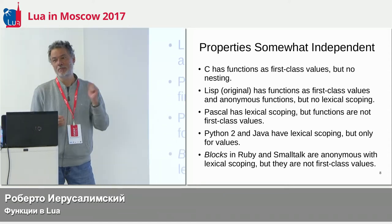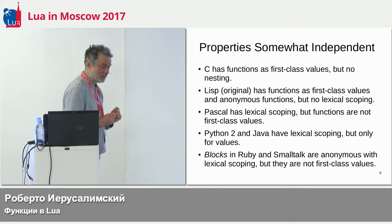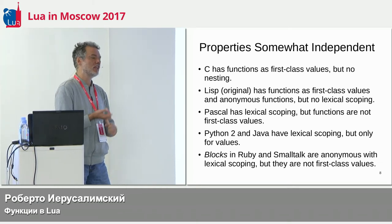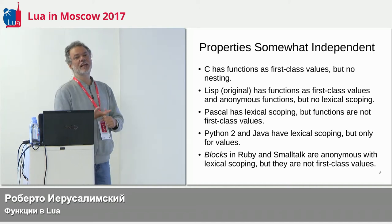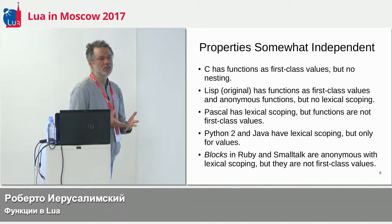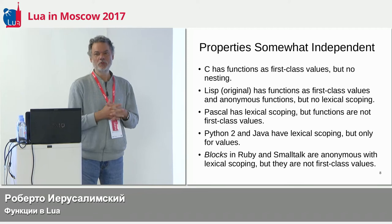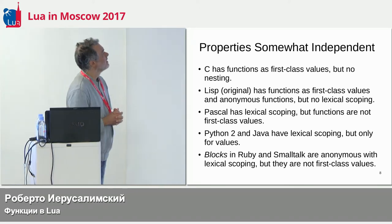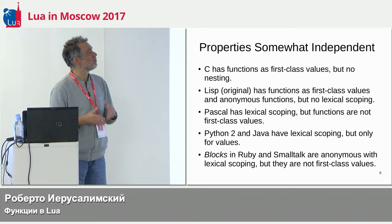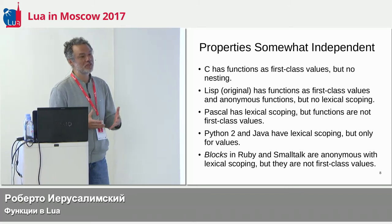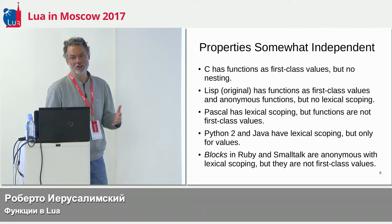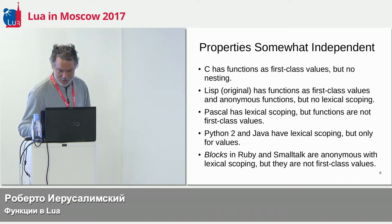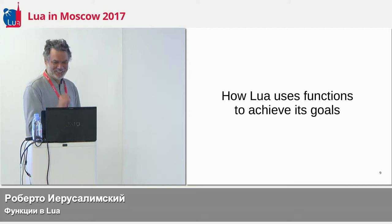None of those names — anonymous functions, lambdas, or first-class values — actually mean precisely what we want to say. The correct term would be something like 'first-class functions with lexical scoping,' which is a horrible name, but that's what we have to say to be correct.